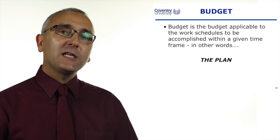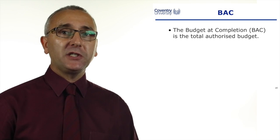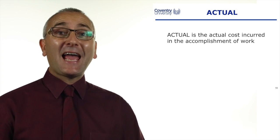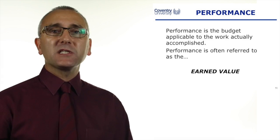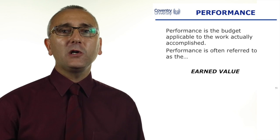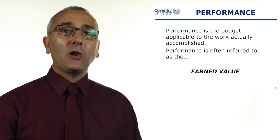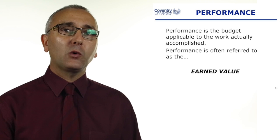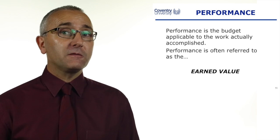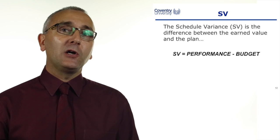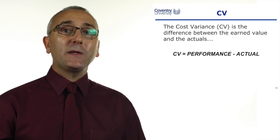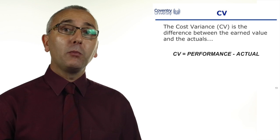So let's define some of these terms. The budget is the same as the plan — it's what we think we're going to be spending on the project. The budget at completion will be the total authorised budget. The actual is how much you have actually spent as you go through the project. The performance is the same as the earned value — it represents the value of the work that you have completed. The schedule variance is the difference between the earned value and the budget: performance minus budget. The cost variance is the difference between the earned value and the actual: performance minus actual.